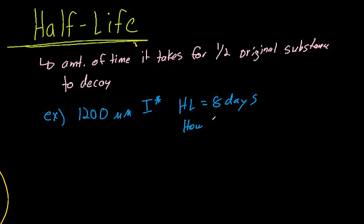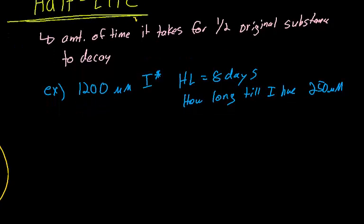How long till I have only 250 micromoles? For me, I find it easy just to write it out as it goes along. So I have T and I have the amount, and I'll make a little chart. I'll say at T=0 days, there's 1,200 micromoles. At eight days, so that's one half-life, we're going to have 600.